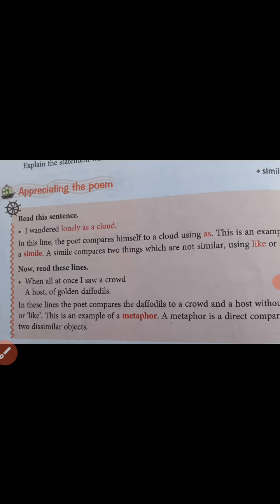Simile mein kya hota tha? Wahaan par bhi two dissimilar things ka comparison hota tha lekin 'as' aur 'like' ka use karke. Metaphor mein bhi two dissimilar things ka hi comparison hota hai — do vibhinn cheezon ke beech mein comparison dikhane ka kaam metaphor se kiya jaata hai — but 'as' aur 'like' ka wahaan par use nahi kiya jaata. Simile mein 'as' aur 'like' ka use karenge, metaphor mein 'as' aur 'like' ka use nahi kiya jaata.